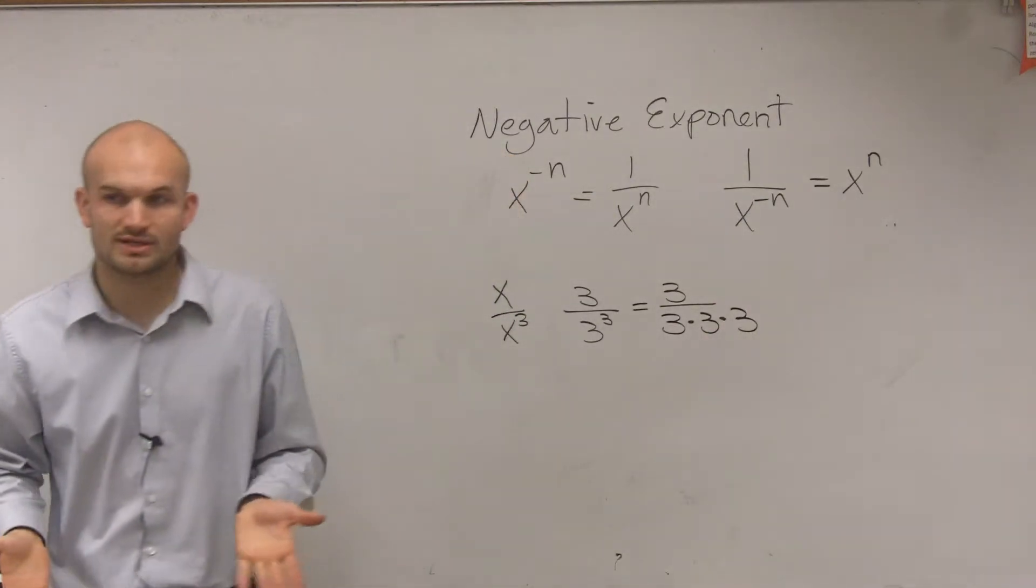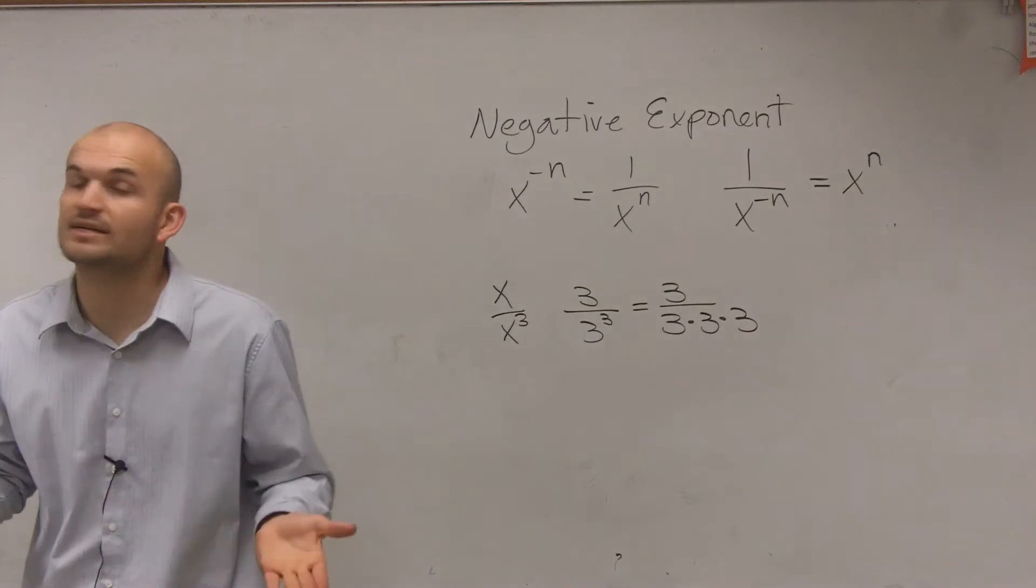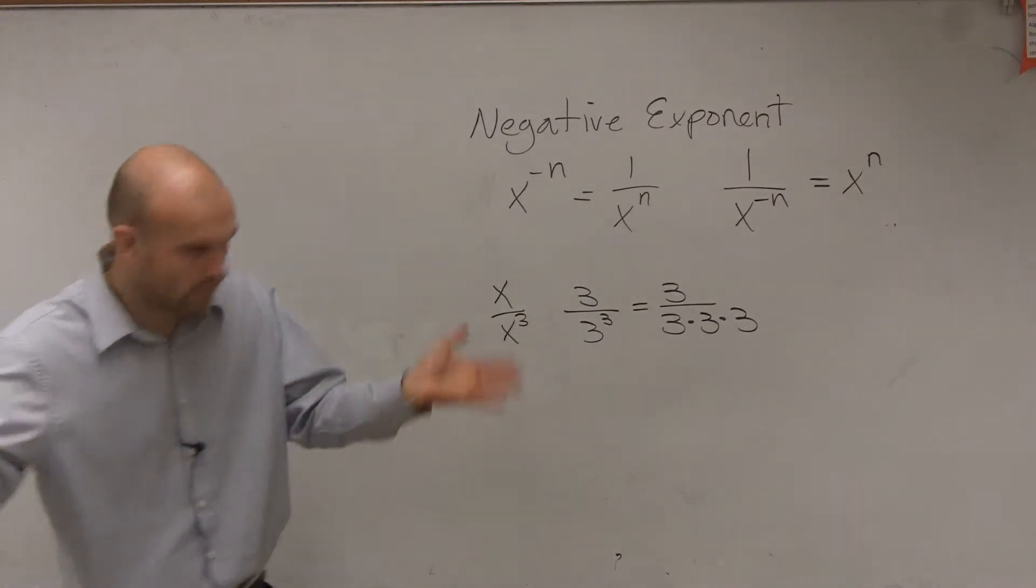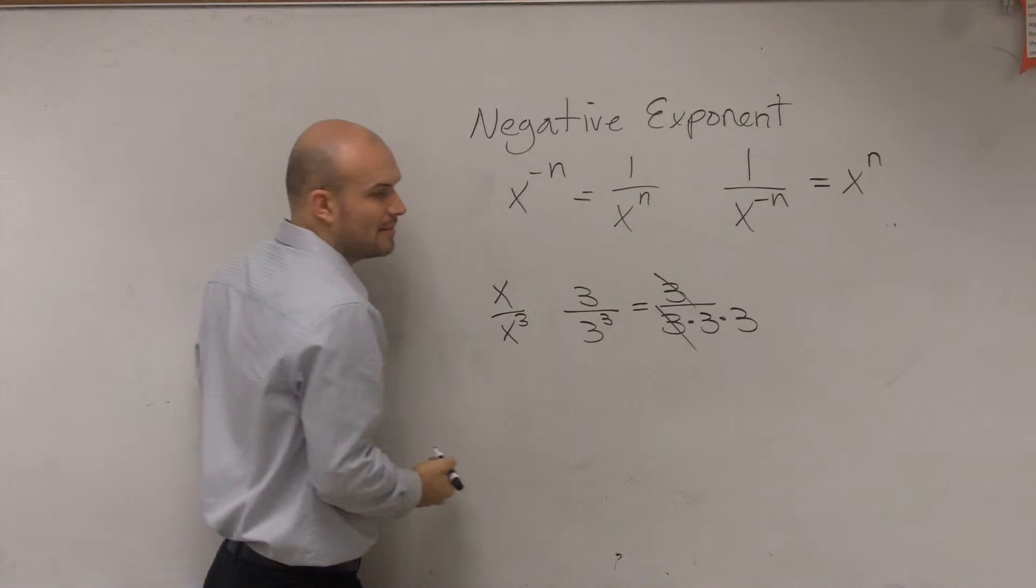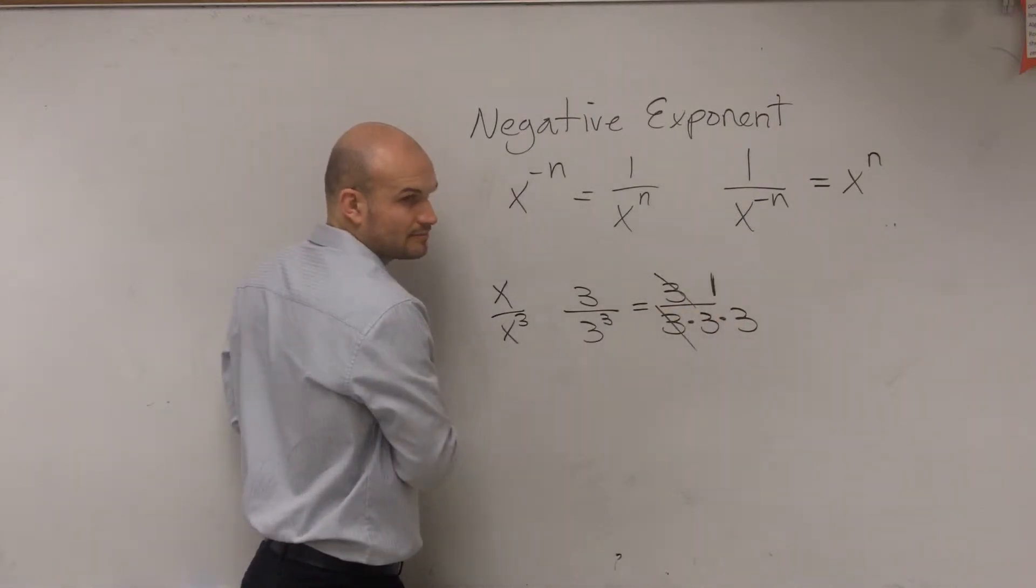Now remember our rule is, anytime you have a number that divides by itself, that's going to divide to 1. So therefore, I'm now left with a 1 up top. And what's on my bottom? 9.